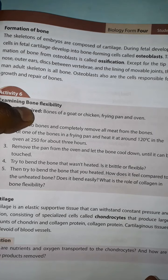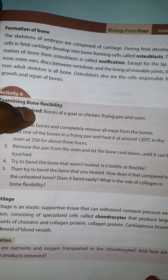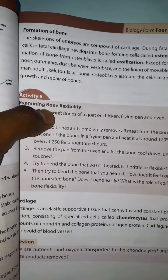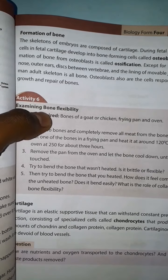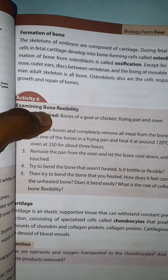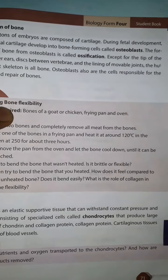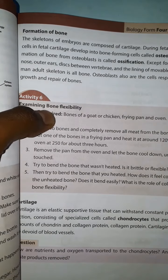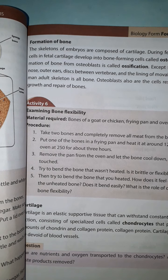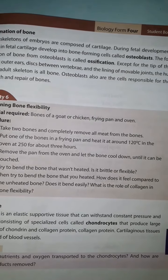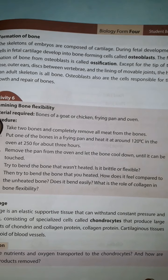Osteoblasts are responsible for the formation of bone. This means the formation of bones, except for the tip of the nose and the outer ears, which remain as cartilage. It also refers to the lining of the movable joints.